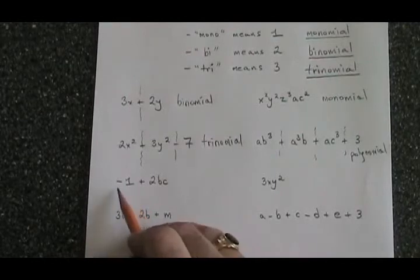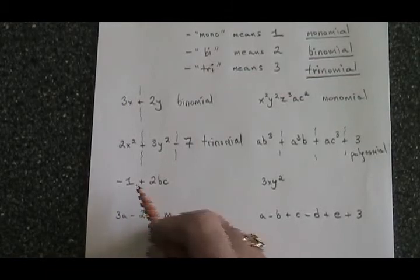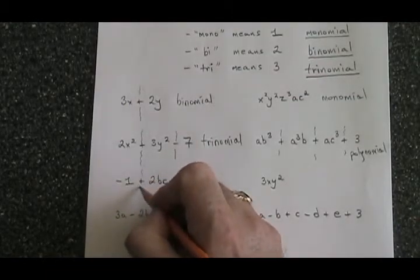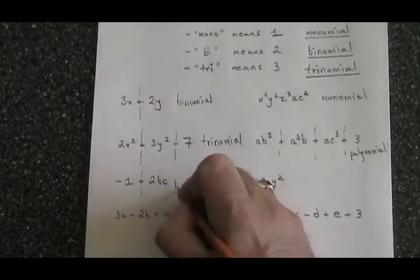Here, this negative sign is not a minus sign. It is just the sign of the monomial, so it does not make a wall, but the plus sign does make a wall. This polynomial has two terms, and we will call it a binomial.